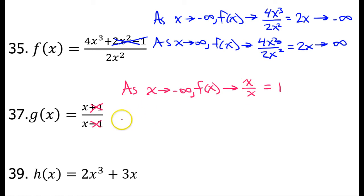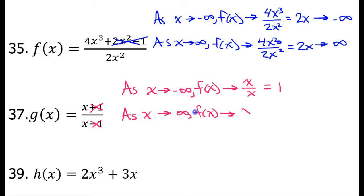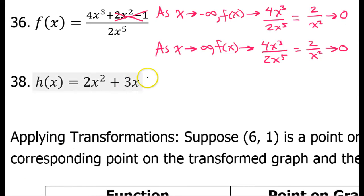So, this same exact thing is going to happen on the right. As x approaches positive infinity, f of x approaches x over x, which again equals 1. Alright, two more.